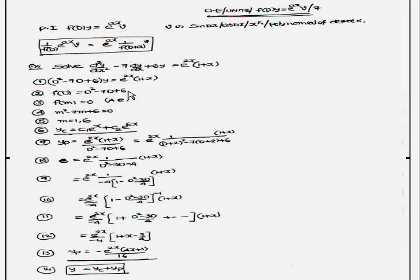f(D) = D² - 7D + 6. Auxiliary equation is f(m) = 0. That is m² - 7m + 6 = 0.